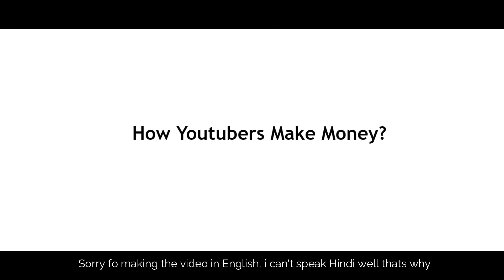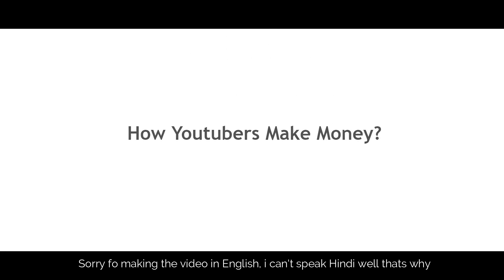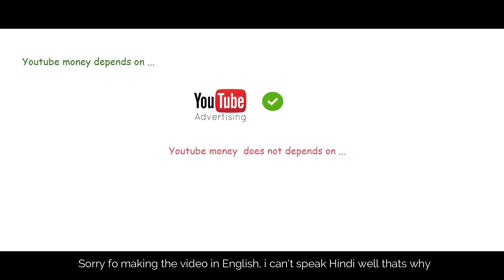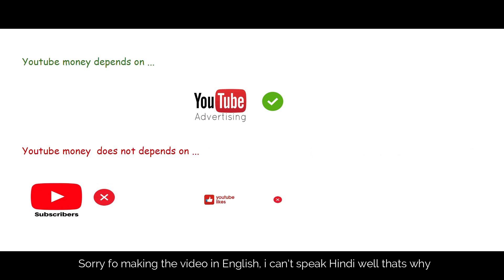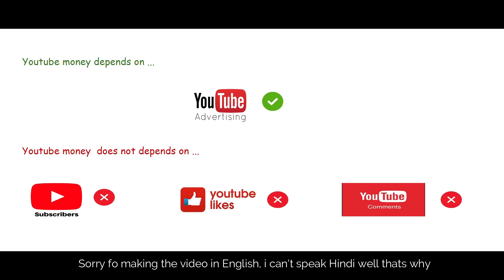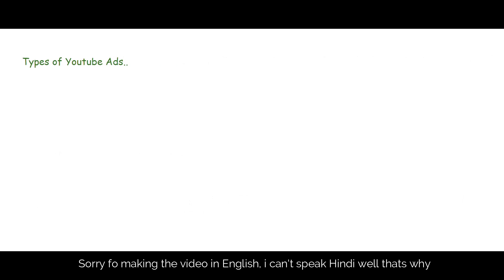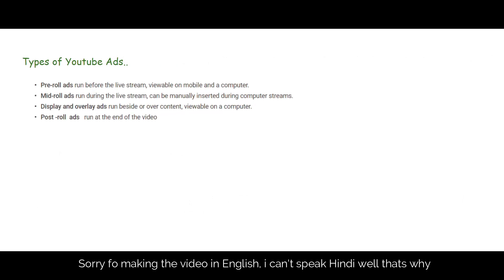First of all, let me tell you how YouTubers make money. YouTube money completely depends on YouTube ads, but not on YouTube subscribers, likes, or comments. In YouTube there are four types of ads: pre-roll ad, mid-roll ad, overlay ad, and post-roll ad.